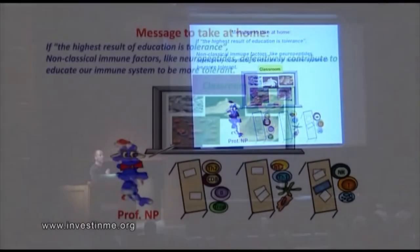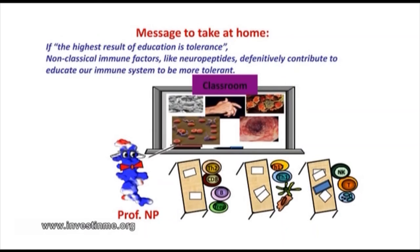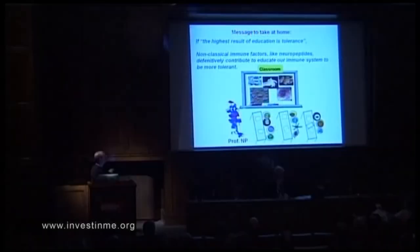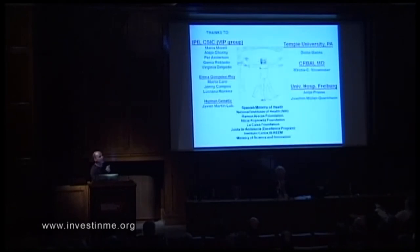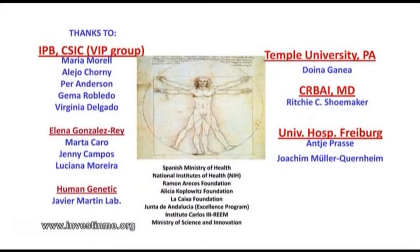Just to take this message home: if it is true that the highest result of education is tolerance, then non-classical immune factors like neuropeptides definitely contribute to making the immune system more tolerant. Thanks to the people who collaborated — the VIP/BAP team, my group in Granada, all collaborators, and those who provided funding. Thank you.